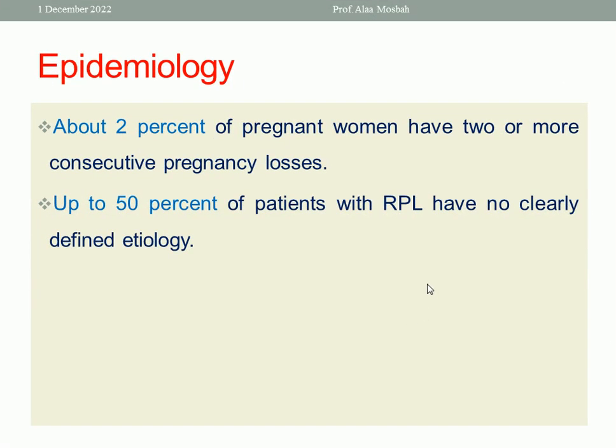Regarding epidemiology, 2% of pregnant women have two or more consecutive pregnancy losses. Up to 50% of patients with recurrent pregnancy loss have no clearly defined etiology. Recurrent pregnancy loss carries many complications, especially psychological ones — distress, depression, and abnormalities in behavior and social functioning. It is a very significant problem for any couple.